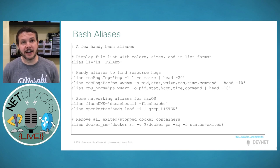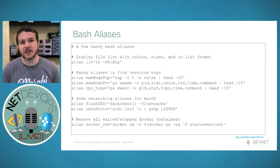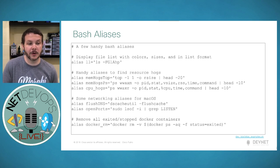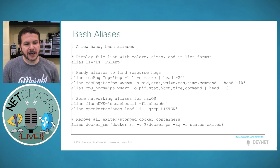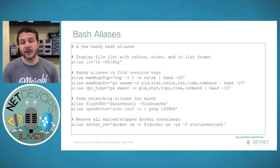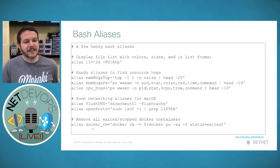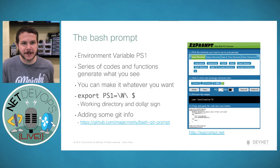Here are some example bash aliases: 'll' for a specific colorized directory listing format instead of 'ls -l'; aliases to find memory and CPU hogs; 'flushdns' to run the macOS DNS cache flush command I can never remember; and a 'docker_rm' alias — contributed by Simon — that removes all stopped and exited Docker containers from your workstation.